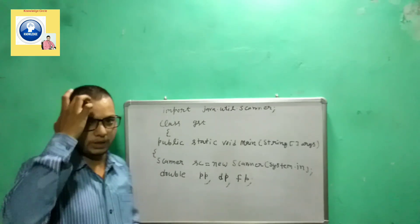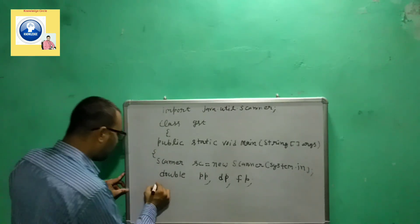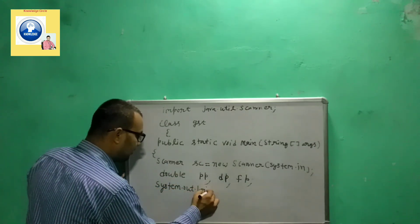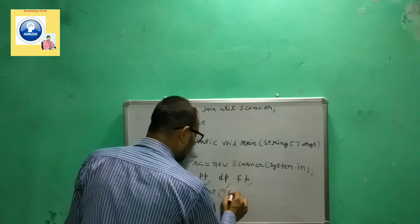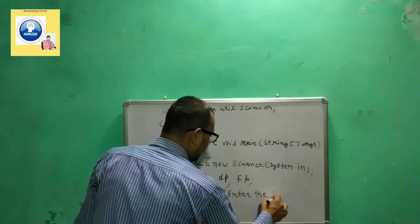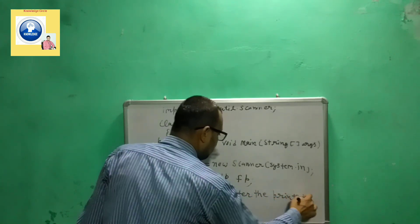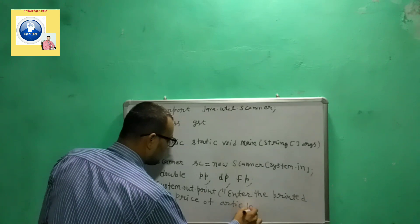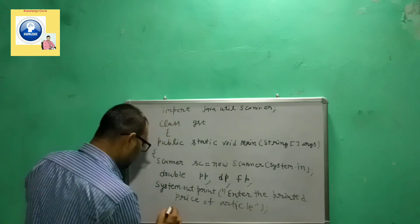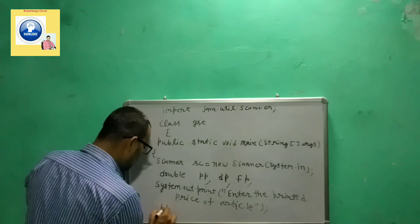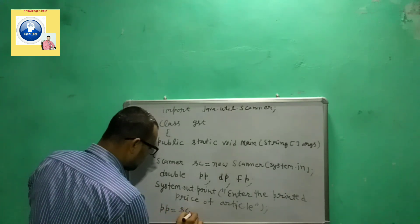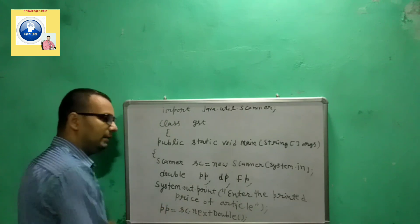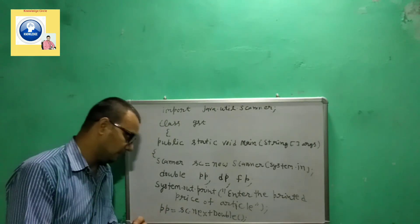With the help of these three variables we are going to calculate the total amount. Let's give a message to the user: system.out.print enter the printed price of article. When the user sees this message, user gives a value that we will store in PP using sc.nextDouble function.